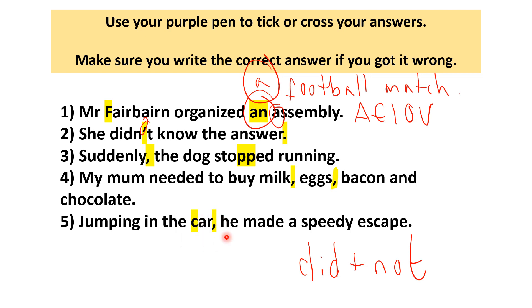Remember, when you see a comma you need to pause. Without pausing, the sentence would sound something like: 'Jumping in the car he made a speedy escape.' But with the comma: 'Jumping in the car, he made a speedy escape.' So the comma makes sure that the sentence makes sense.